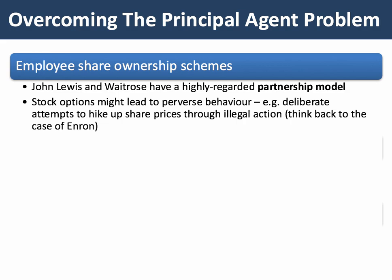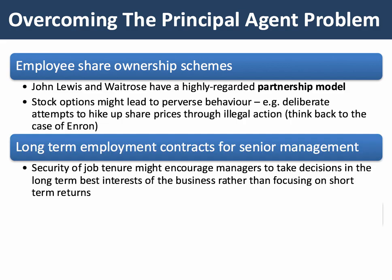However, in evaluation, giving managers stock options can actually lead to perverse and damaging behavior. Think back to the case of Enron — managers were using deliberately anti-competitive tactics, hiking up the price of energy shares through illegal action, including creating energy blackouts, because if the share price went up they could cash in their shares and make serious money. Do google Enron to understand more about the dangers of perverse behavior from share ownership schemes.